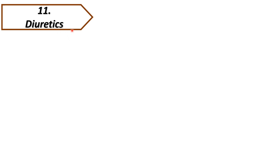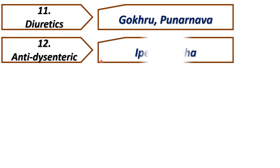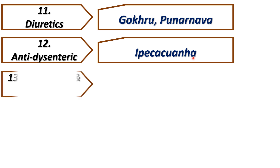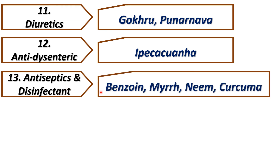The eleventh subcategory is diuretics, covering gugul and punarnava. Twelfth is anti-dysenterics — the example is ipecac root. Thirteenth is antiseptics and disinfectants, covering drugs like benzoin, neem, and curcuma. Curcuma is also called turmeric.